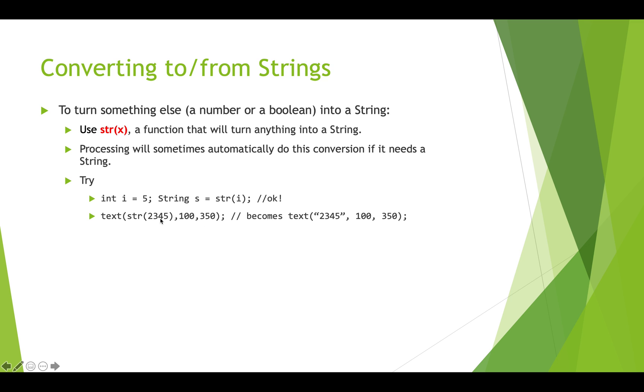And here we can do the same thing when we're trying to print out or display text on the canvas. We can pass in a number but pass it in through str and it will become like this. This is one of those cases where processing will actually do this for you without using the str. So if you do this, processing knows that the first parameter of the text function needs to be a string. It'll take this number and just turn it into a string and print it out. So there are occasions where processing will do an automatic conversion for you.